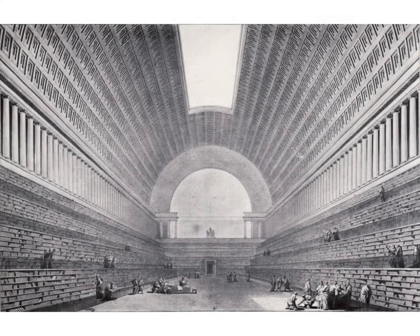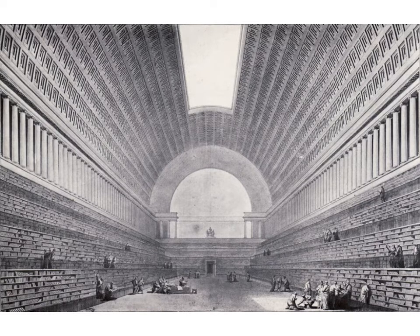Boulay composed his library out of simple, clear elements: an enormous barrel vault ceiling with a single huge skylight, a stepped bank of shelving rising up from the ground with a colonnade between, separating the ceiling from the shelving. Sadly, Boulay's library was never built, but when the first public library was eventually built, his design had a tremendous influence.